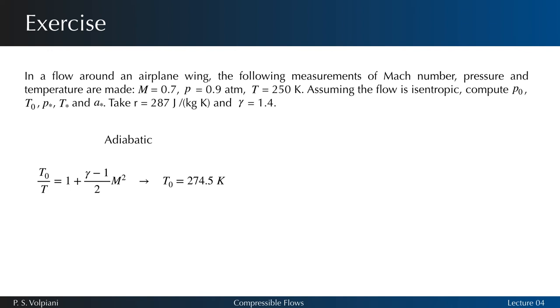The hypothesis of isentropic flow is necessary to derive that p equals a constant times rho to the power of gamma, and it yields the following expression.